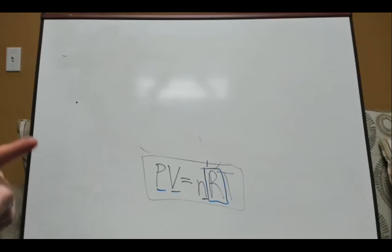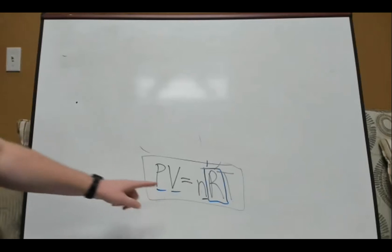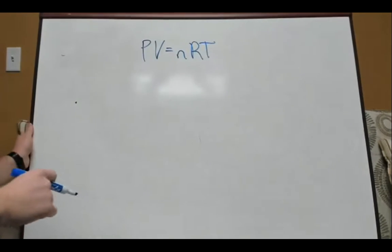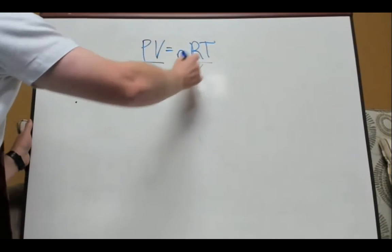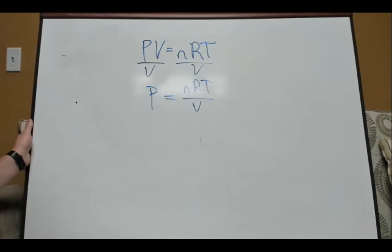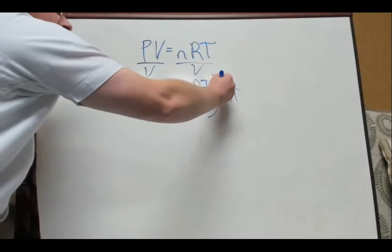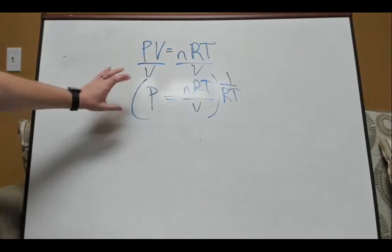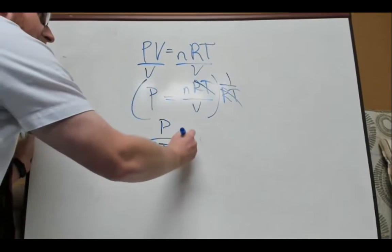Let's solve for pressure first. We have PV = NRT. Dividing both sides by volume gives us pressure equals NRT over V. Now let's solve for N over V. Whether you divide by volume then by RT, or by RT then by volume, it's the same thing. The RT cancels, and what you're left with is P over RT equals N over V.